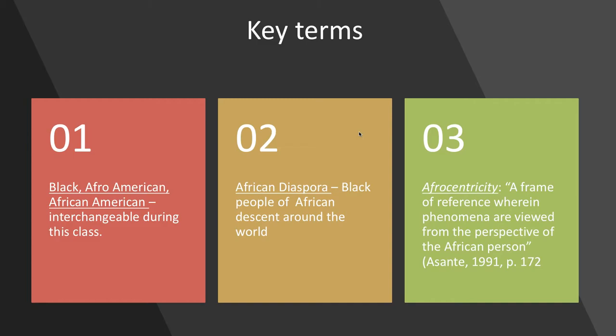Afrocentricity. Malika Asante coined the phrase Afrocentricity and it means a frame of reference wherein phenomena are viewed from the perspective of African people. So when you hear me talk about Afrocentricity or something being Afrocentric, it means that it's centered within the experience — it puts African people at the center of analysis versus Eurocentricity, which puts Europeans at the center.